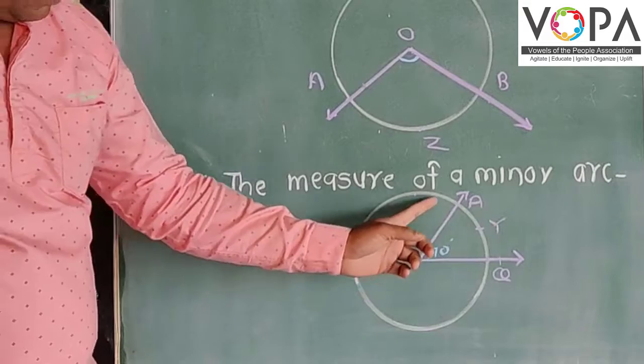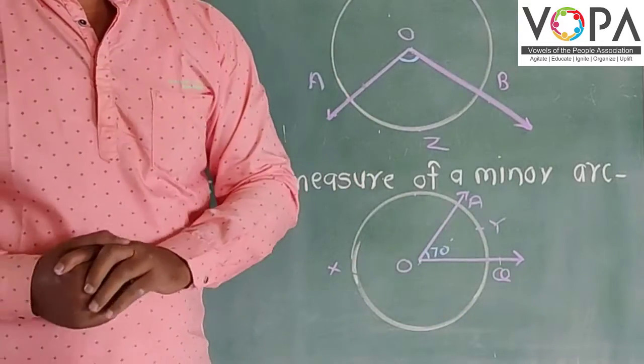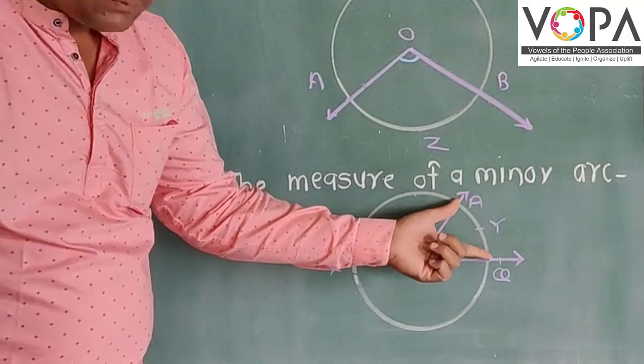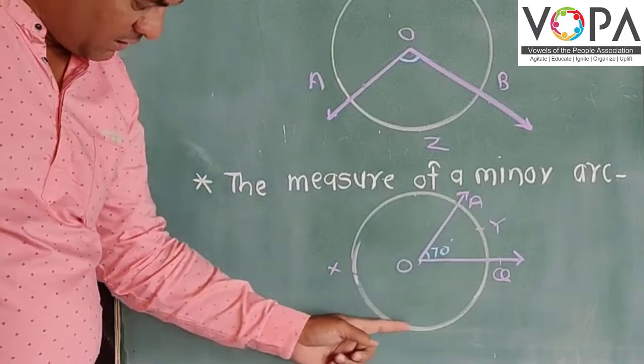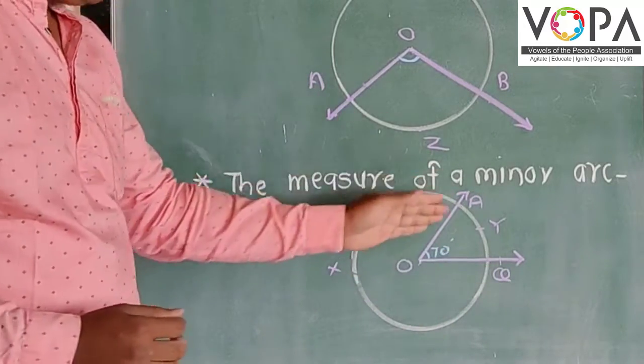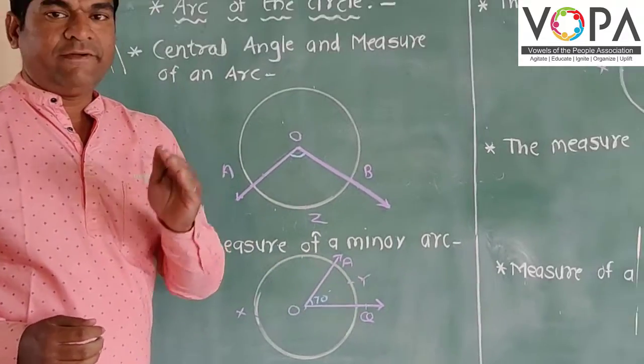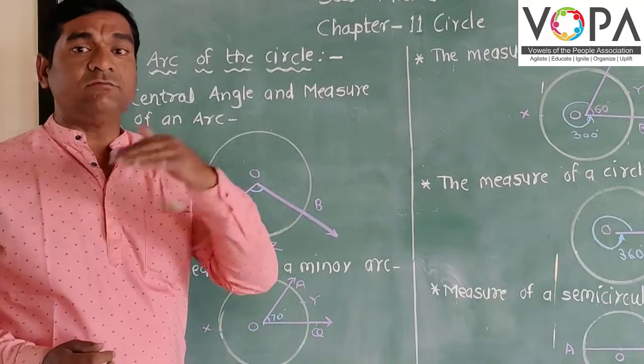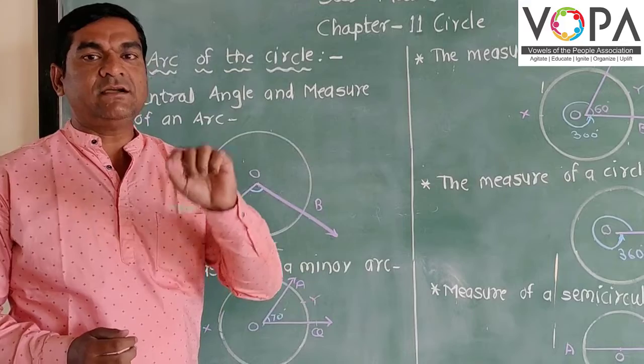Because of this angle, the two parts of the circumference we have there. See, the first part of the circumference and another part of the circumference. So in this case the minor arc is known as the value of the angle is less than 180 degrees. It is called as a minor arc.